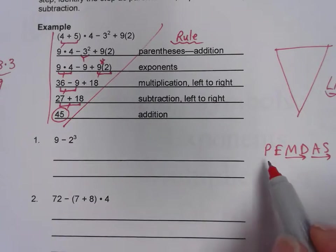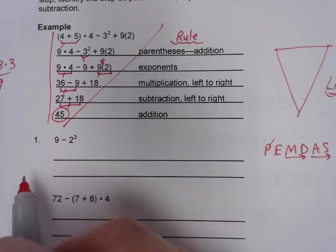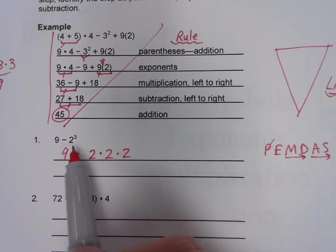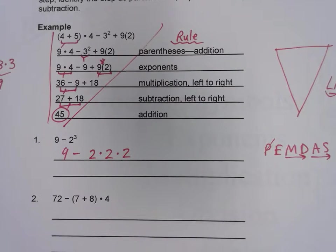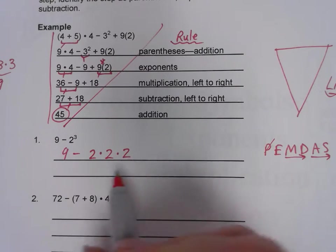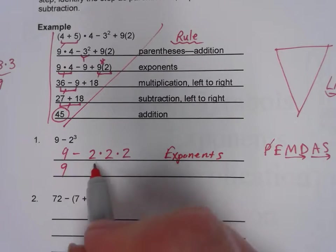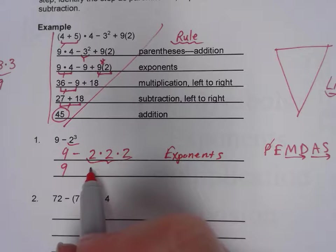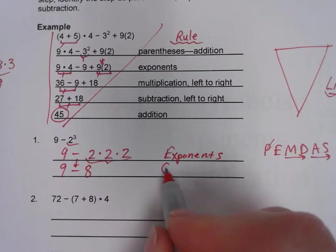First, any parentheses? No. Any exponents? Yes. I want to show expanded form: nine take away two times two times two — the base is two, the exponent is three, so I show the base three times with multiplication. Next I simplify that expanded form. Two times two times two: the answer is eight. We bring down that subtraction and the nine out front we haven't used yet. This is still the rule of exponents.